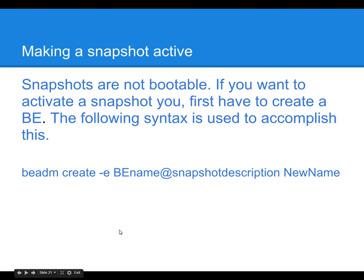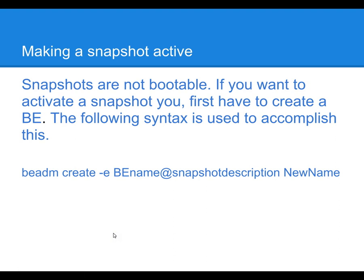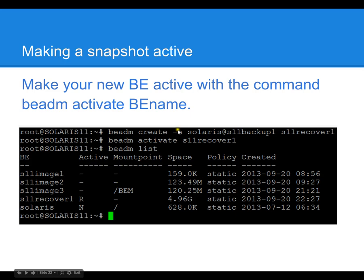If you want to use or boot that snapshot, note that a snapshot is not bootable by itself — it is technically a snapshot, not a boot environment. To boot from it, you have to create a boot environment from it using: beadm create -e, then the snapshot name, then the new boot environment name. Here's an example: beadm create -e Solaris@Solaris11backup1 — this full name is the snapshot — and we're calling the new boot environment Solaris 11 recover 1.